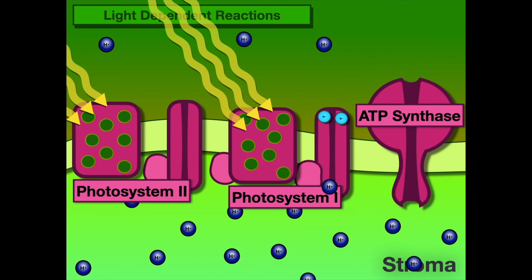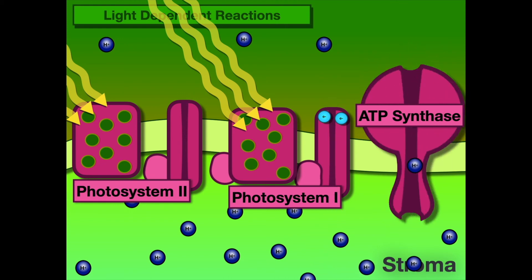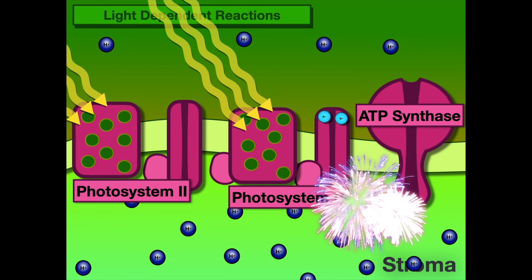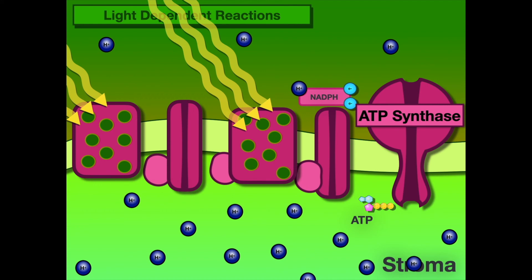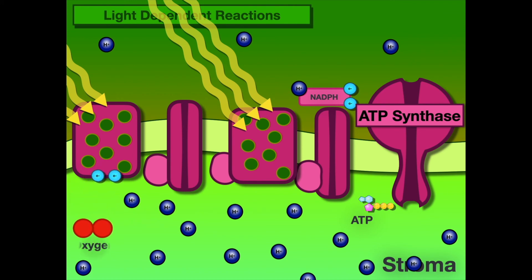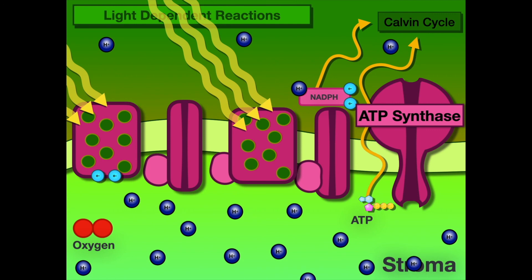Once that gradient has been established, it provides the necessary energy to power ATP synthase, which takes ADP and turns it into ATP. The electrons at the end are added to NADP+ with a hydrogen ion to create NADPH. Water is then split at Photosystem II to provide the electrons necessary for the electron transport chain to continue. Oxygen is a byproduct, we continue to establish a hydrogen ion gradient, and finally NADPH and ATP go to power the Calvin cycle.